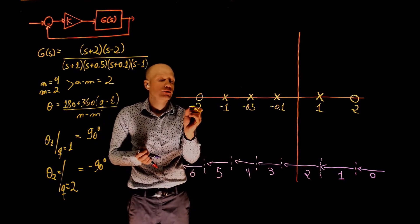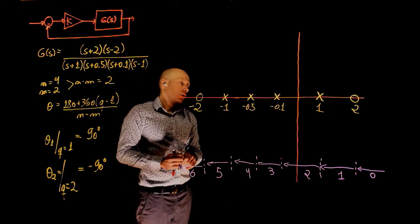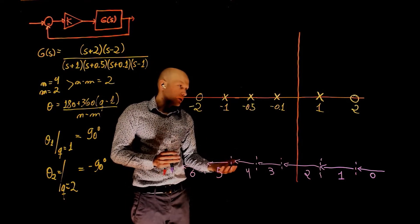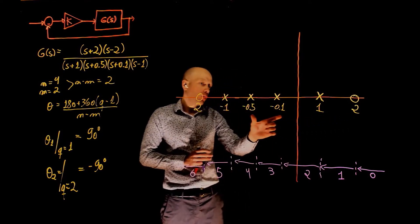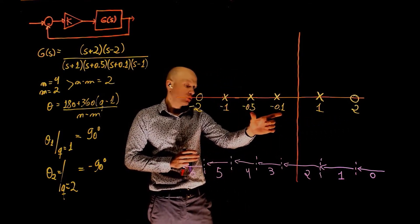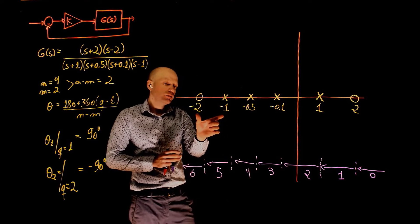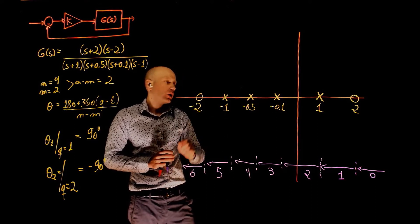Where are the odd numbers? We have one between one and two, one between 0.5 and 0.1, and one between negative two and one.